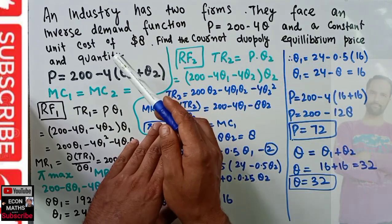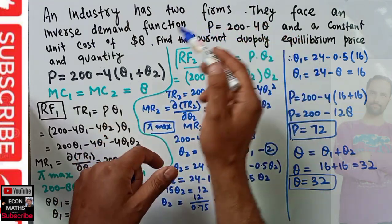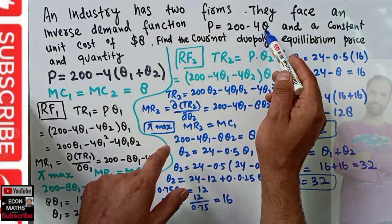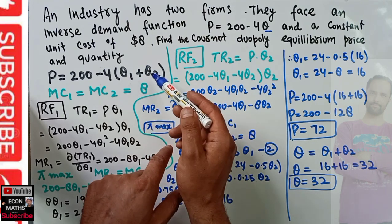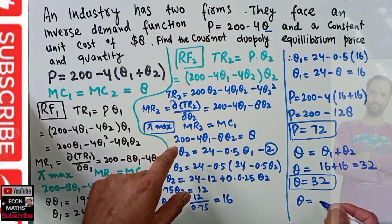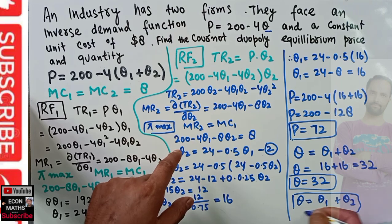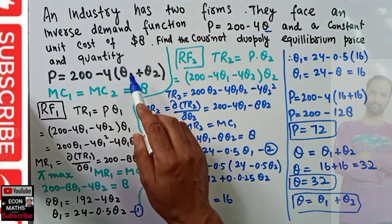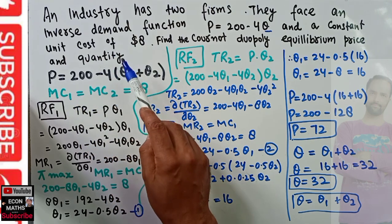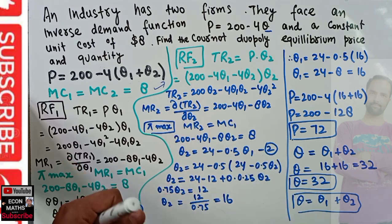We have to find out the Cournot duopoly equilibrium price and quantity. We are given this demand function, written as P = 200 minus 4(Q1 + Q2), because industry output Q equals the output of firm 1 plus the output of firm 2. The marginal cost of firm 1 equals the marginal cost of firm 2, which is constant at 8.